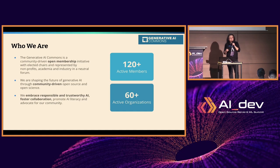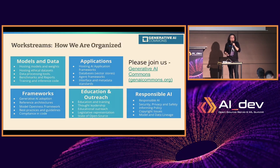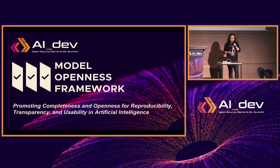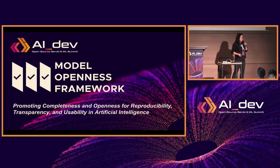We embrace responsible and ethical trustworthy AI and open communication. We believe openness and transparency are the cornerstone of building responsible AI. Currently we have five work streams, and we can never have enough people — please come join us. Check out the Generative AI Commons website. MOF and MOT came out of the frameworks work stream. Without further ado, I'd like to introduce our next speaker, Kaylin.